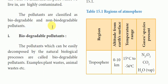Pollutants are classified into biodegradable and non-biodegradable pollutants. Pollutants that can be easily decomposed by natural biological processes are called biodegradable pollutants. Examples include plant waste, animal waste, and similar organic matter.